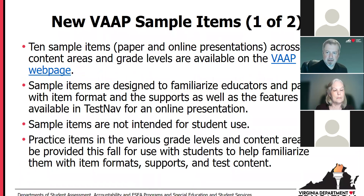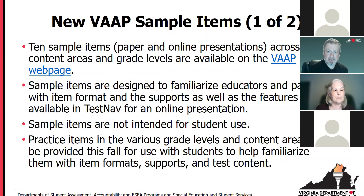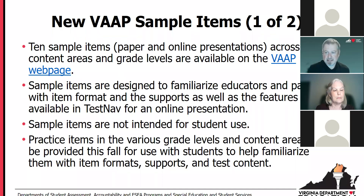There are some things available for examiners to see what these items look like and how TestNav works. We created 10 sample items, available in both paper and online presentation, covering various content areas and grade levels. That's available on the VAP page — the link on the DOE page will take you to it. These sample items are really only for educators and parents, not for students, because they are a mixture of different content areas and grade levels — really just for adults to see what the test looks like.